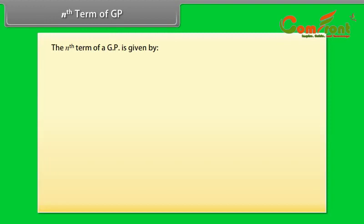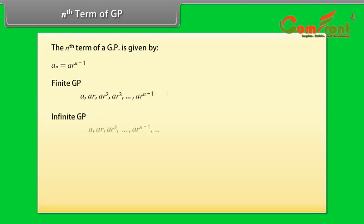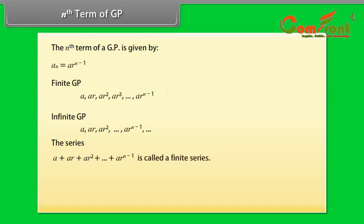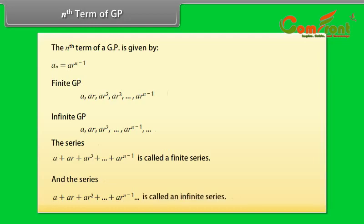The Nth term of a GP is given by Aₙ = A × R^(n−1). A finite GP series is: A + AR + AR² + ... + AR^(n−1). An infinite GP series is: A + AR + AR² + ... + AR^(n−1) + ... and continues indefinitely.